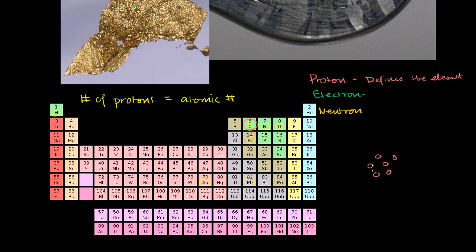Let me draw a carbon-12 nucleus: six protons and six neutrons. This right here is the nucleus of carbon-12. The number 12 represents the total number of protons and neutrons inside its nucleus. This carbon, by definition, has an atomic number of six. Carbon-14 will still have six protons but would have eight neutrons — so the number of neutrons can change. But this is carbon-12 right over here.